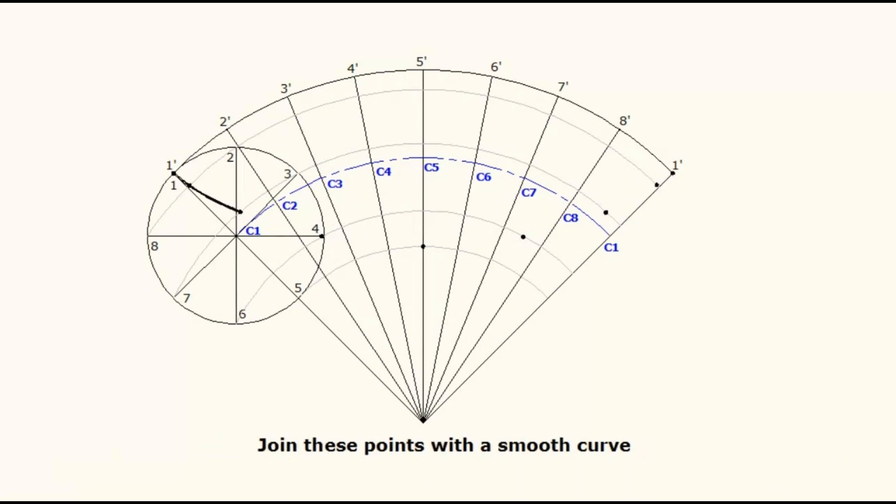Join all these points with a smooth curve. This curve is called hypocycloid. To draw tangent and normal, mark any desired point on the curve. That point as center and with the generating circle radius, cut a point on the center arc. Join this point to the center of the directing arc.